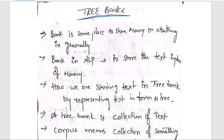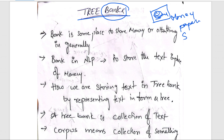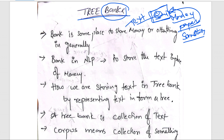Now, everyone knows what a bank is, right? So it is a place where we can store something. We can store money, or we can store some papers, or we can store something in this place. So based on what you store, we can call it a bank. If you store money, we call it a money bank. If you store papers, we call it a paper bank. So like that, we can store a corpus of text in the form of a tree — that's why we call it a tree bank.